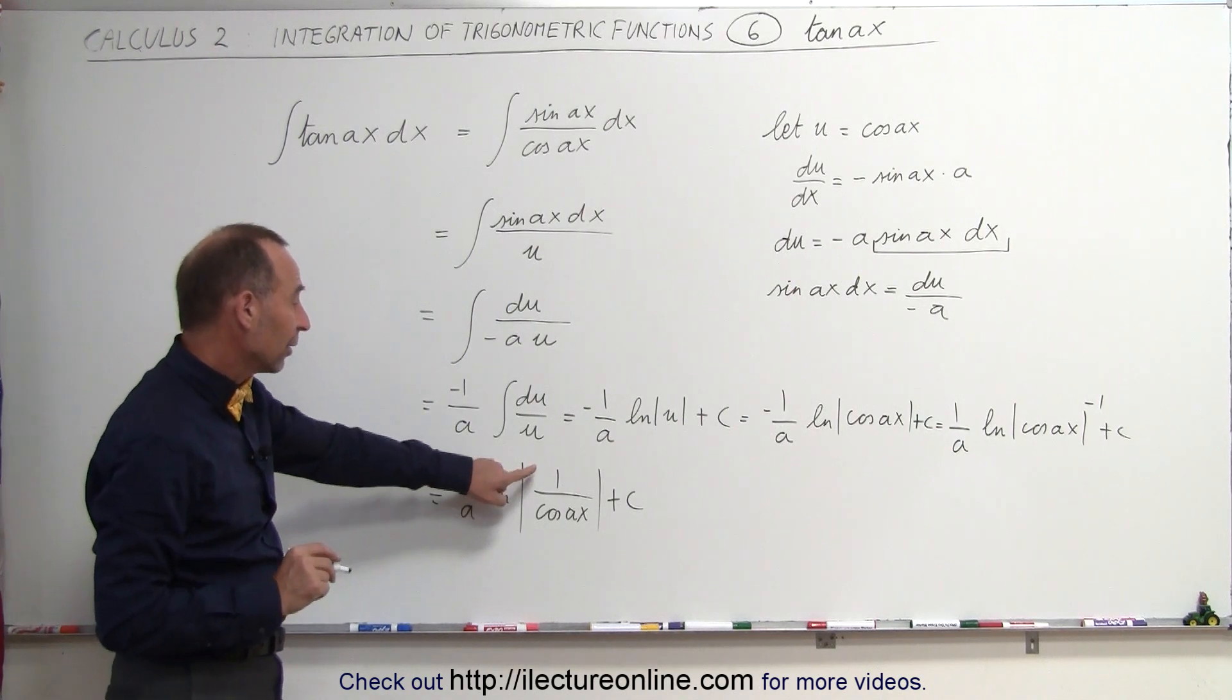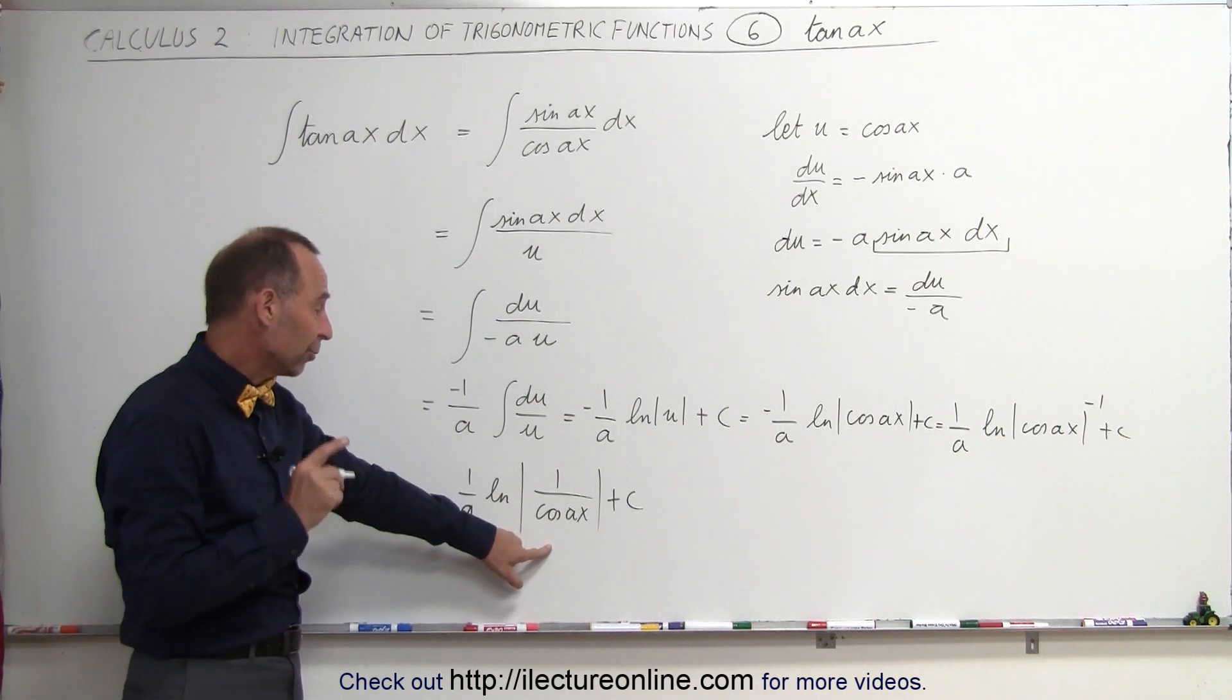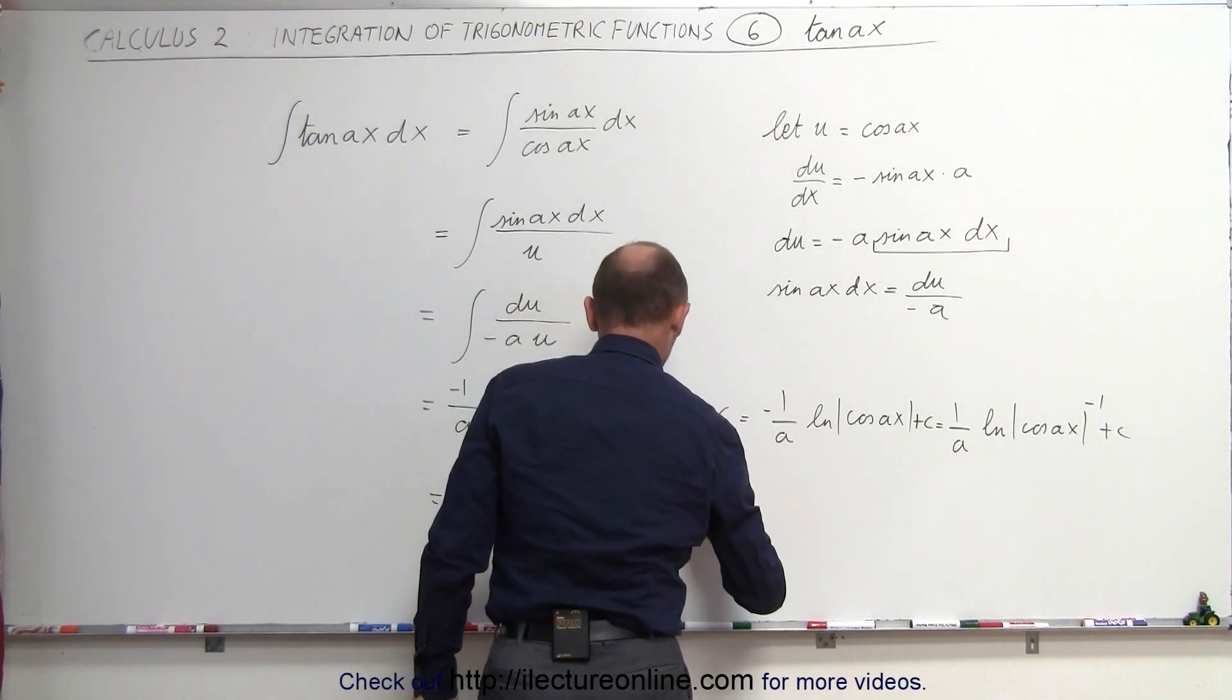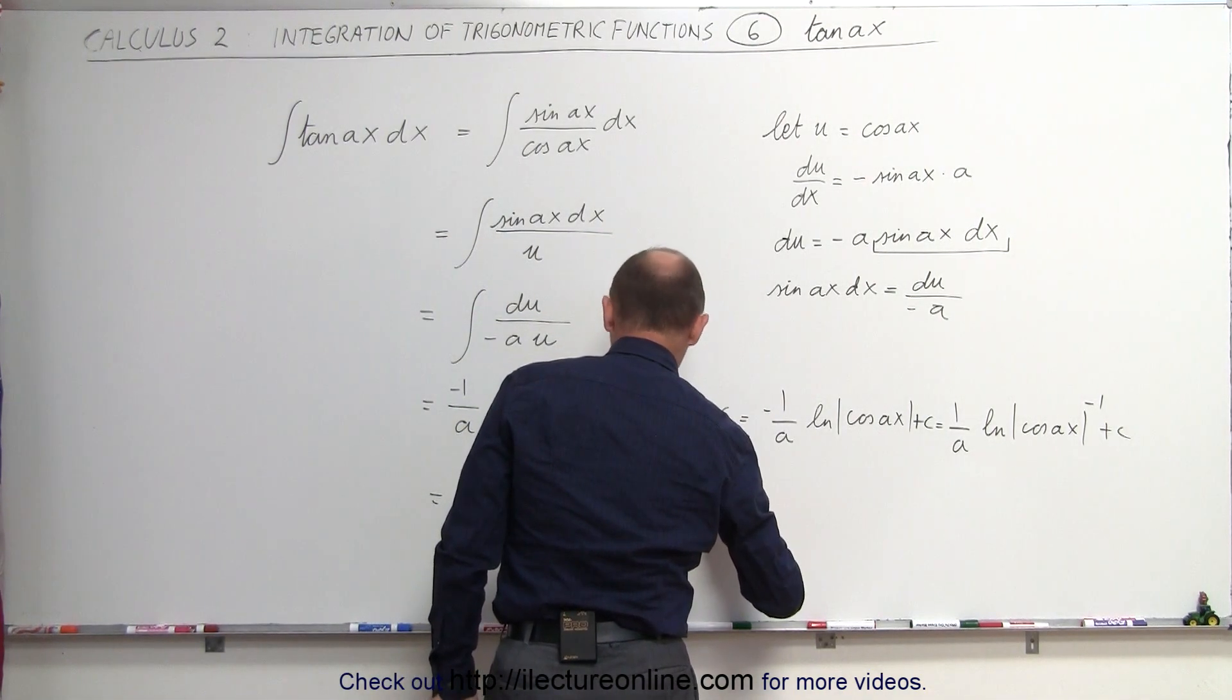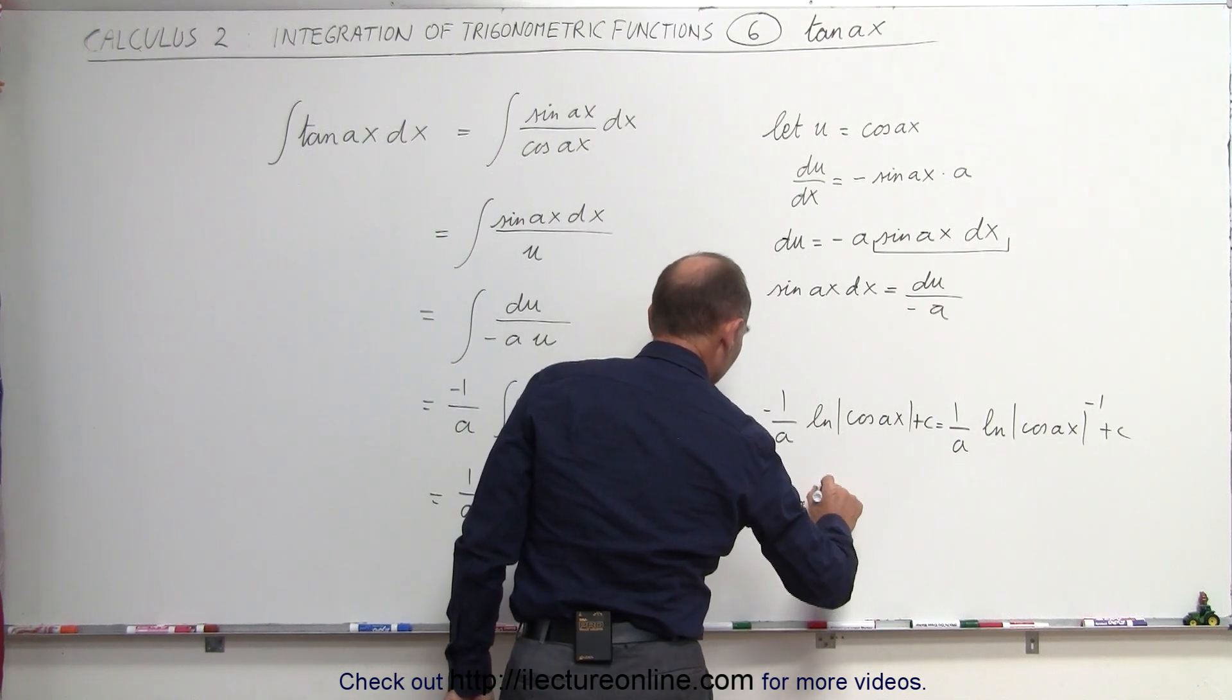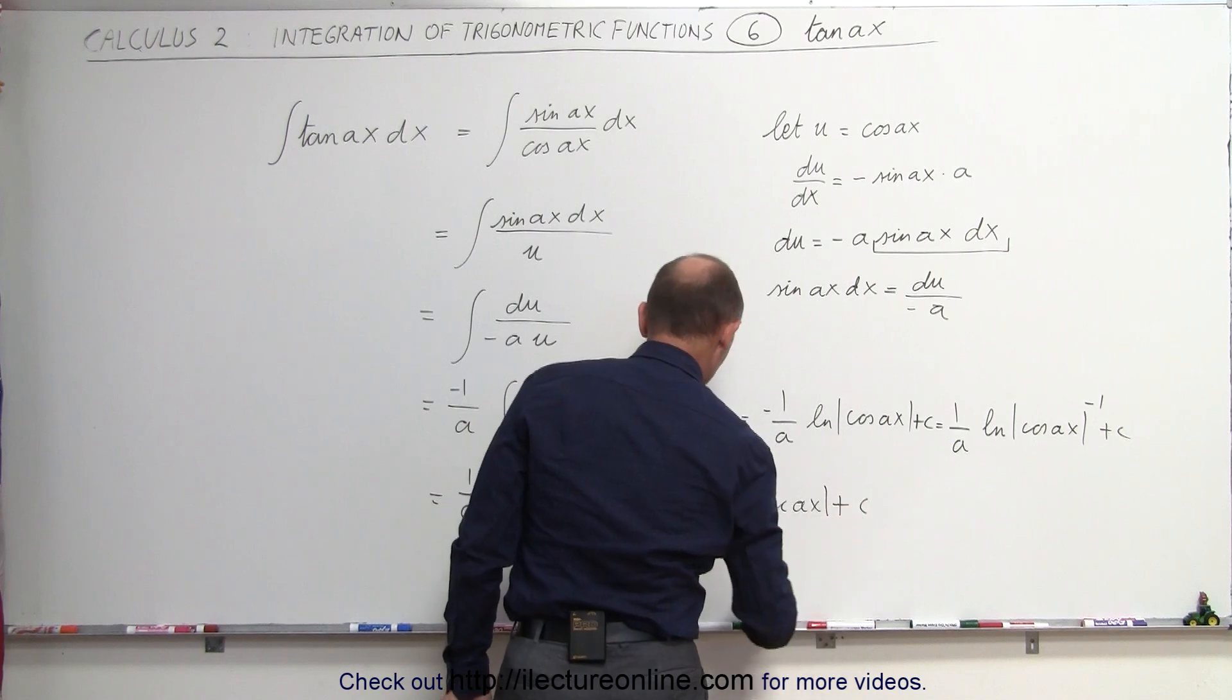Next, what we can say is that 1 over the cosine of Ax must be equal to the secant of Ax. So this is equal to 1 over A times the natural log of the secant of Ax plus a constant of integration.